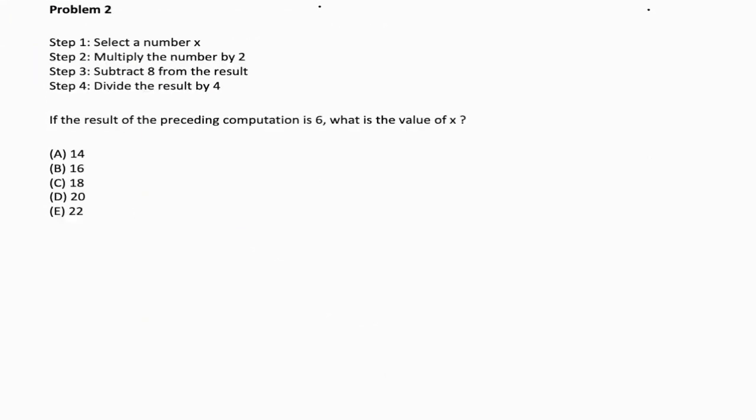All right. So next up, we have problem number two. I'm going to just take notes as I read this. So let's see. Select a number x. Okay. Multiply the number by 2. So 2x, that's 2 times x. Subtract 8 from the result. All right. Minus 8. Divide the result by 4. Here we go. So this is what it has described, right?